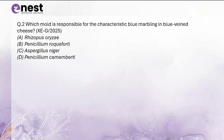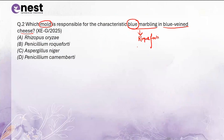The next question is: which mold is responsible for the characteristic blue marbling in blue-veiled cheese? Please remember: if it is blue marbling, it is always roqueforte. You can remember the mnemonic VMR — blue marbling roqueforte.